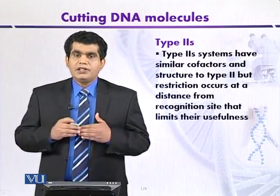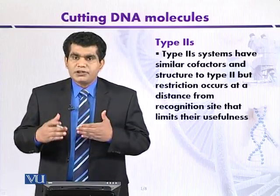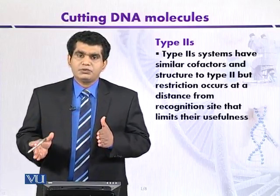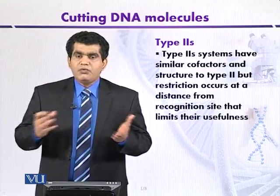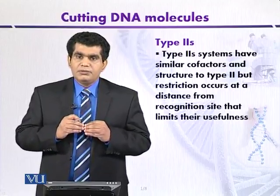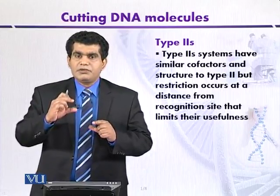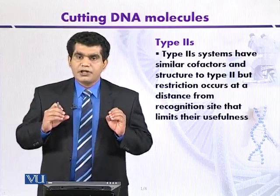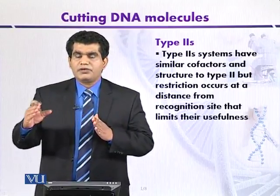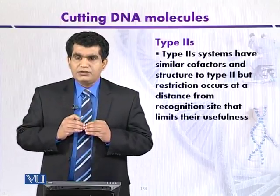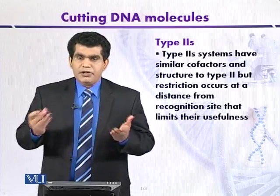The last category is called type 2s. Structurally, they are more closely related to type 2 restriction enzymes, but they also have no value. The reason is that although they recognize a specific DNA sequence or target site, they also cut away from the target sequence. That's why they also have no value in the process of gene manipulation.